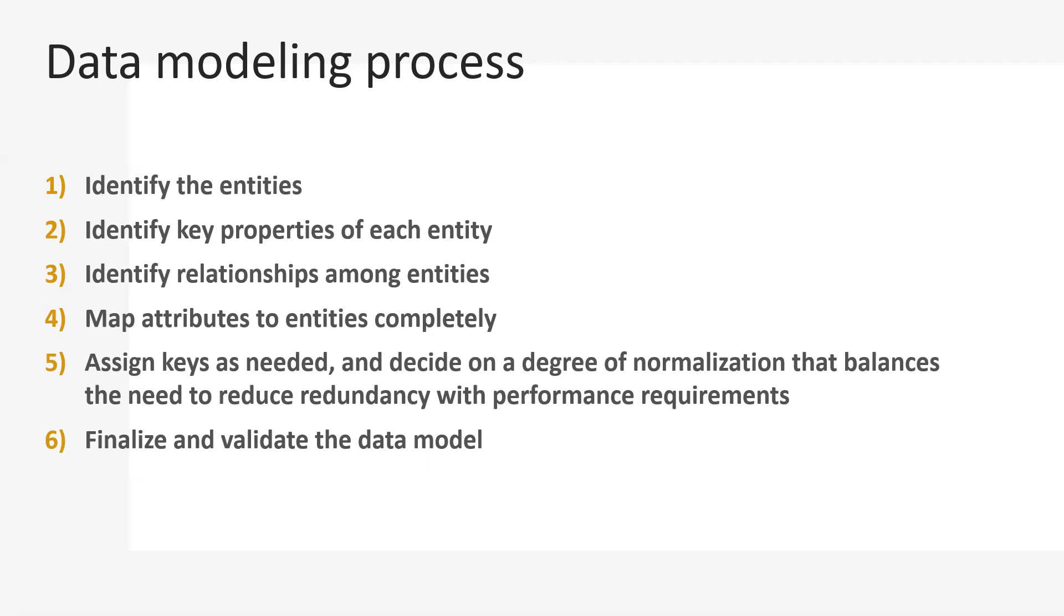Those workflows generally look like: identify entities, identify key properties of each entity, identify relationships among entities, map attributes to entities completely, assign keys as needed and decide on a degree of normalization that balances the need to reduce redundancy with performance requirements, and finalize and validate the data model.